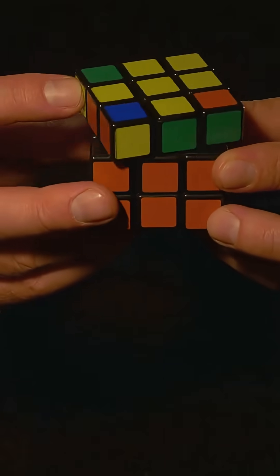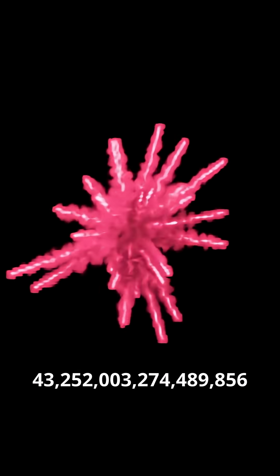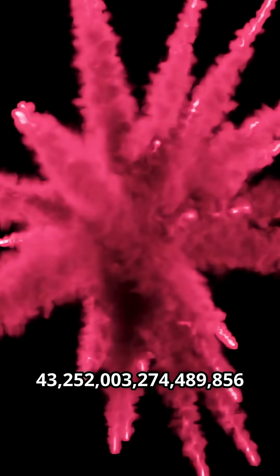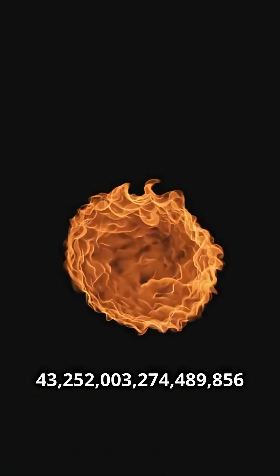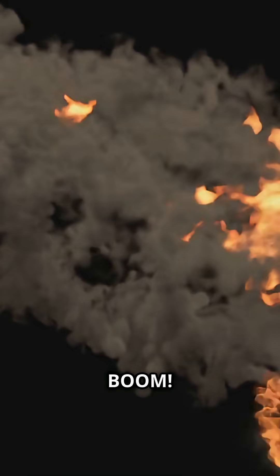Corners and edges can't just flip alone. Put it all together and you get 43 quadrillion, 252 trillion, 3 billion, 274 million, 489,856 scrambles. Boom!